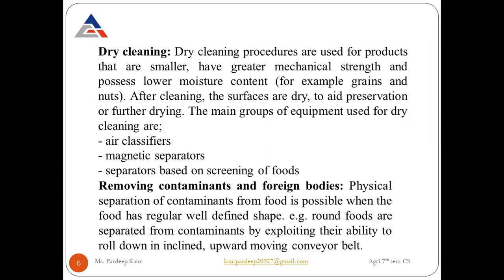Dry cleaning is the procedure used for products that are smaller and have greater mechanical strength and possess low moisture content, for example, grains and nuts. After cleaning, surfaces are dry to aid preservation and further drying. The main groups of equipment used are air classifiers, magnetic separators, and separators based on cleaning of food. Physical separation of contaminants from food is possible when food has a regular, well-shaped form, and contaminants are separated by exploiting their ability to move upward and downward.